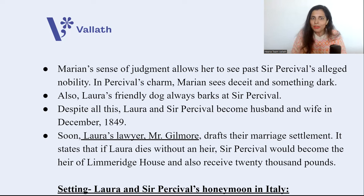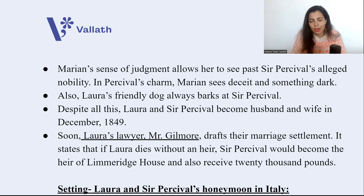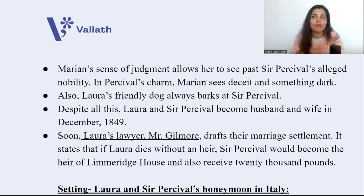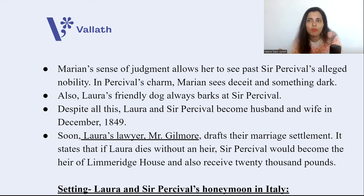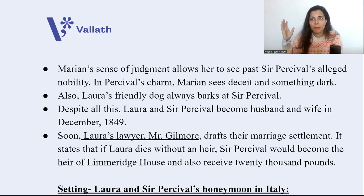After the marriage, the lawyer of Laura, Mr. Gilmore, on the orders of Sir Percival, makes a marriage settlement. According to this settlement, if Laura dies without an heir or if Laura has an affair, Sir Percival would become the heir of Limeridge House — since Laura would become heir of Limeridge House after Mr. Fairley dies. Sir Percival would also receive £20,000, which was quite an amount at that time.